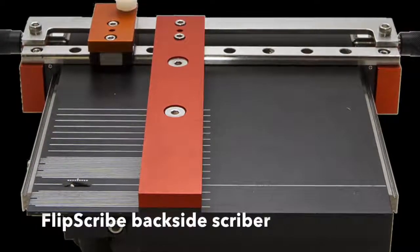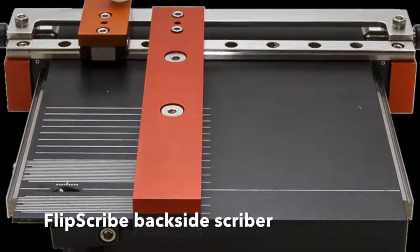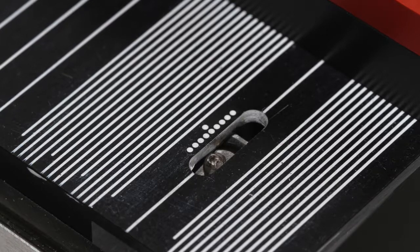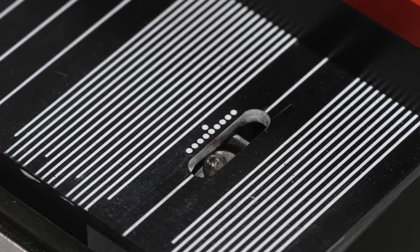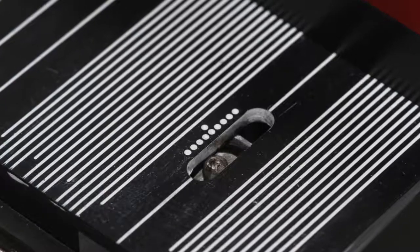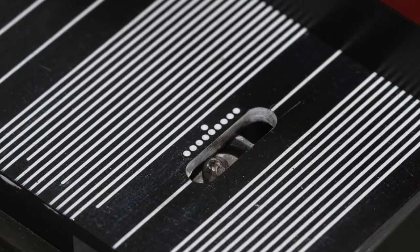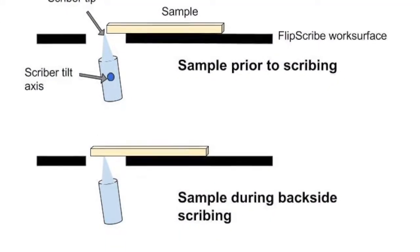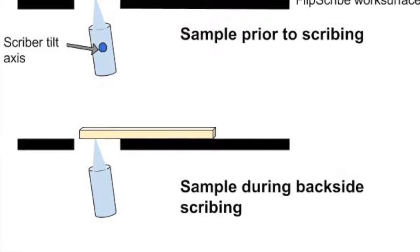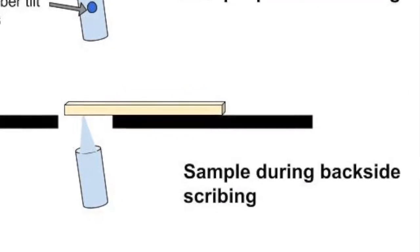This cleaving tool is novel in how it scribes the wafer. With the scriber embedded in the base of the tool, scribes are made on the back side of the wafer. This will preserve patterned material on the top side while placing a precise scribe underneath.